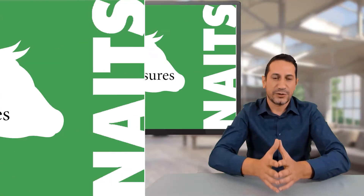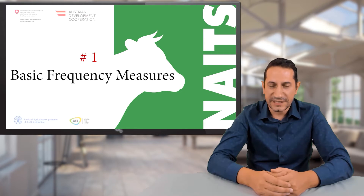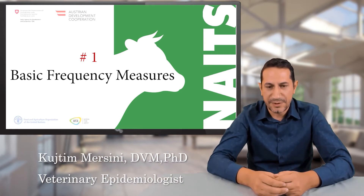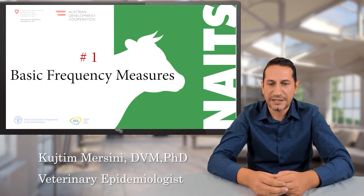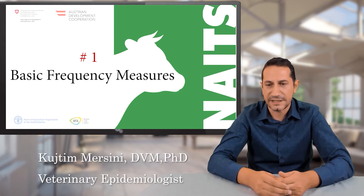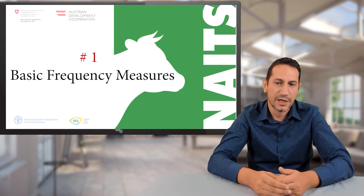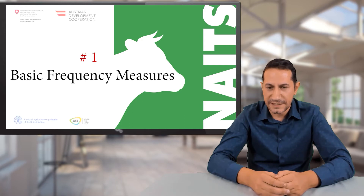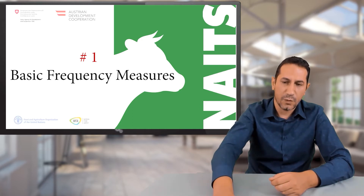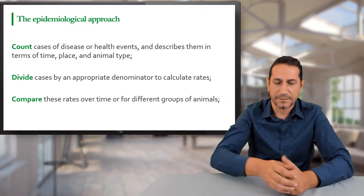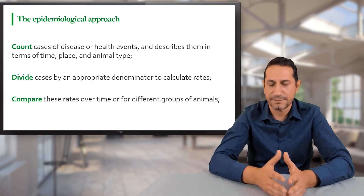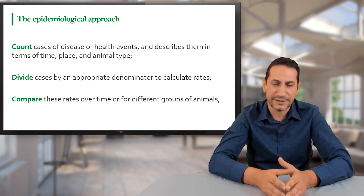What we are going to talk about today is measures of disease frequency. One of the major duties of veterinary epidemiologists is to measure the frequency of diseases and the burden of disease in populations. To do so, they use measures of disease frequency, which basically are incidences, prevalences, and other rates of interest.